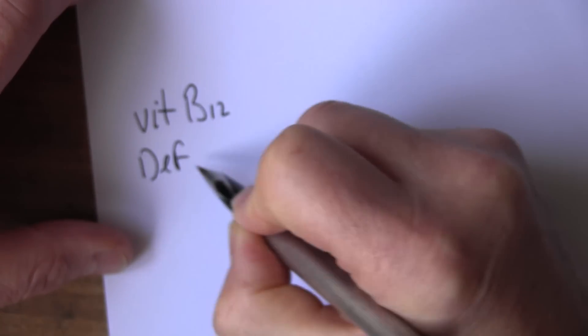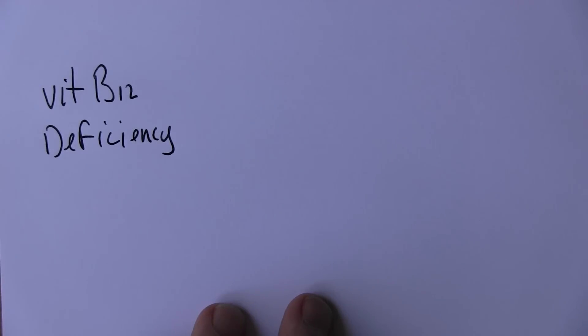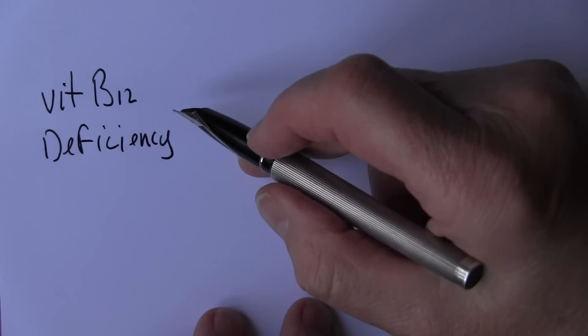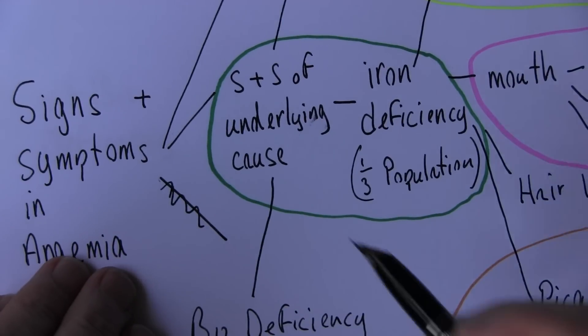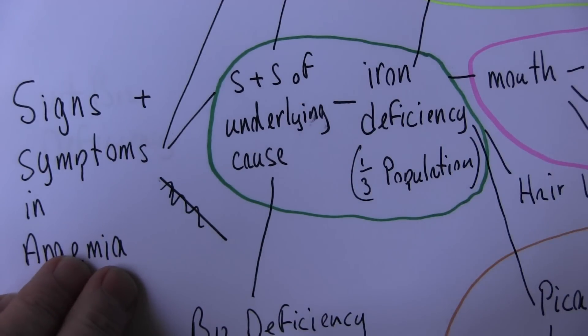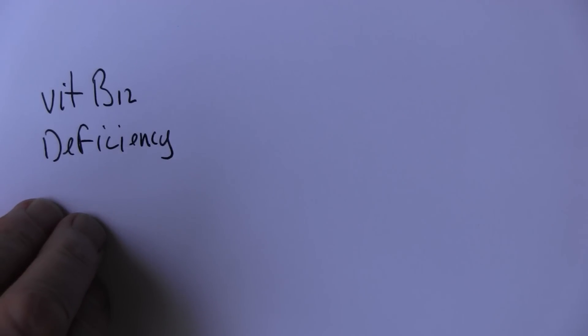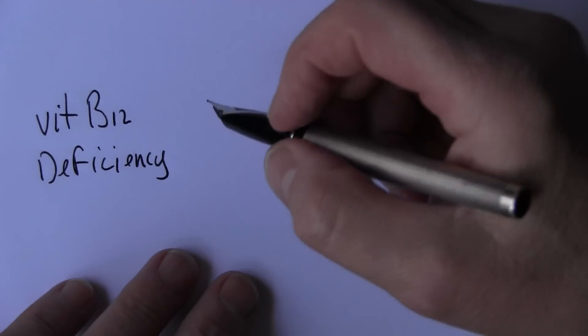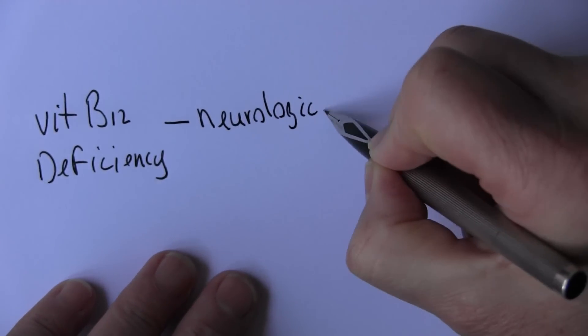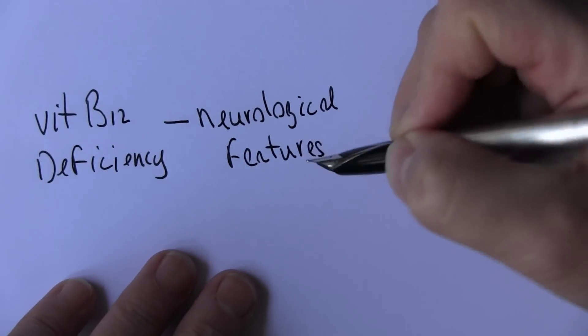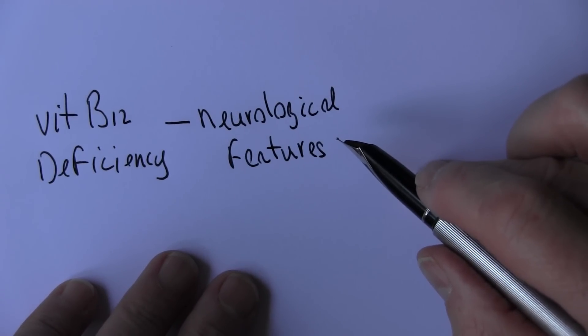So what might we see in B12 deficiency? Vitamin B12 deficiency. Well we know that vitamin B12 is essential for the formation of the red blood cells. But we're not looking at that in this particular video, because we're looking at the signs and symptoms of the underlying cause. And the B12 deficiency is an underlying cause of the anemia. So as well as the anemia, what might we see? Well in vitamin B12 deficiency we often get neurological features.